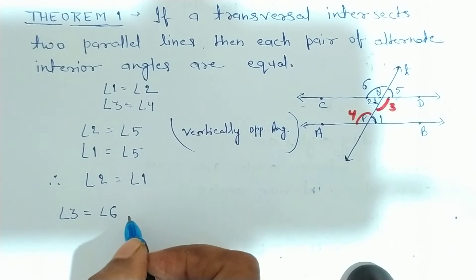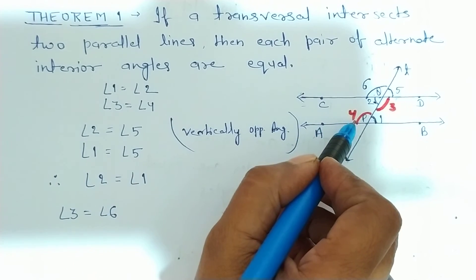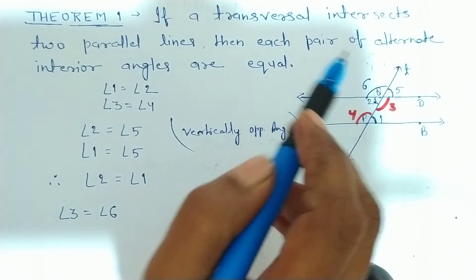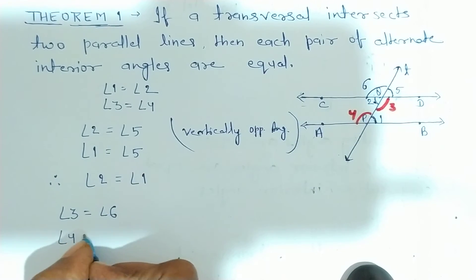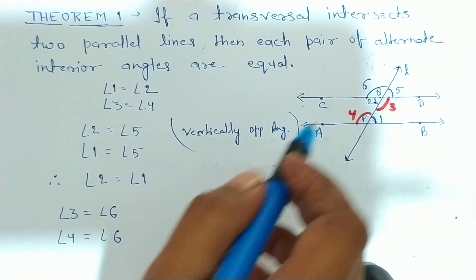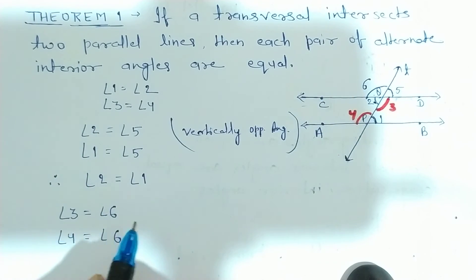Vertically opposite angle se aur angle 4, angle 4 equal to angle 6. Angle 4 equal to angle 6 due to corresponding angles axiom. Theek hai? To, uske according corresponding pair of angles equal hote hain.